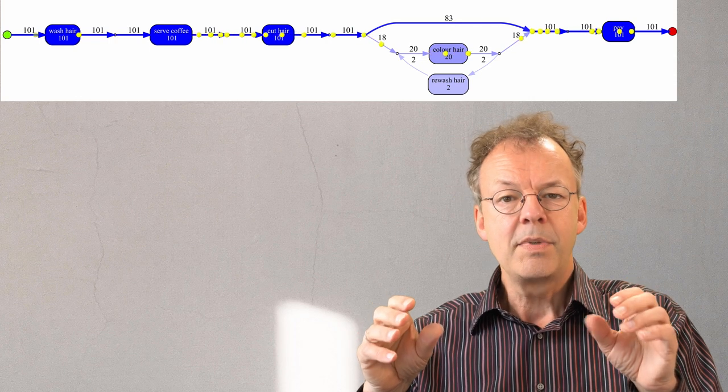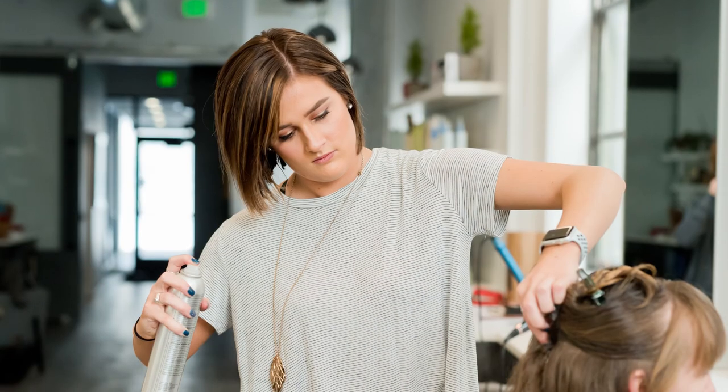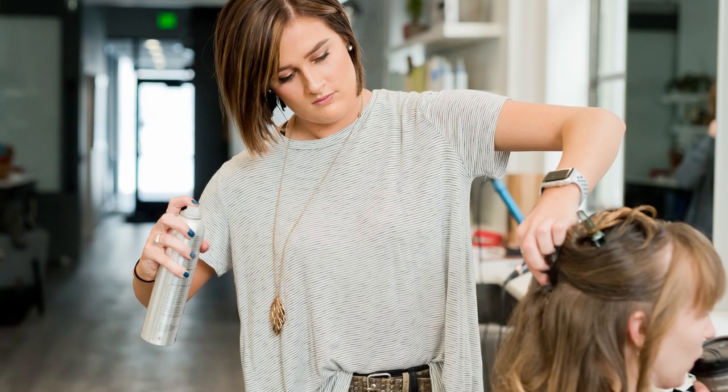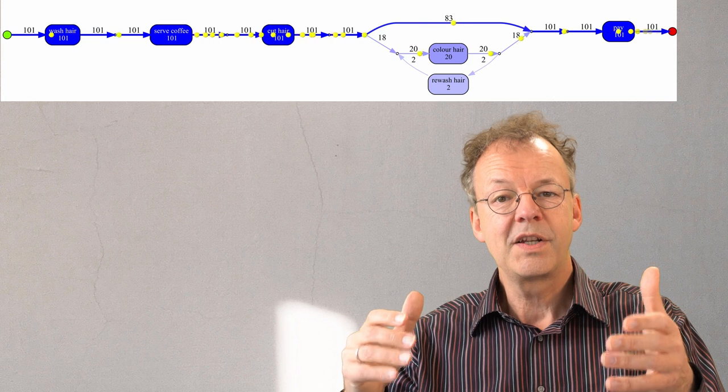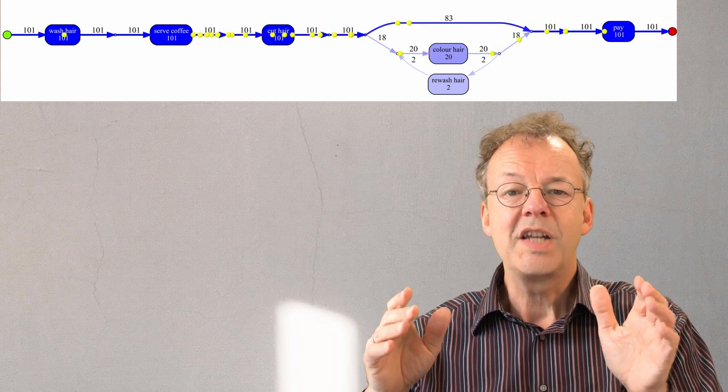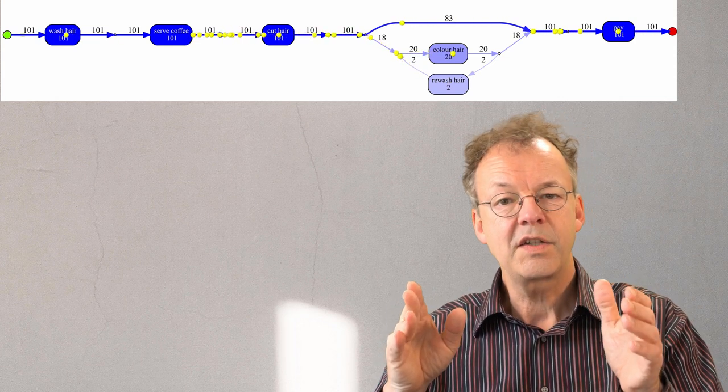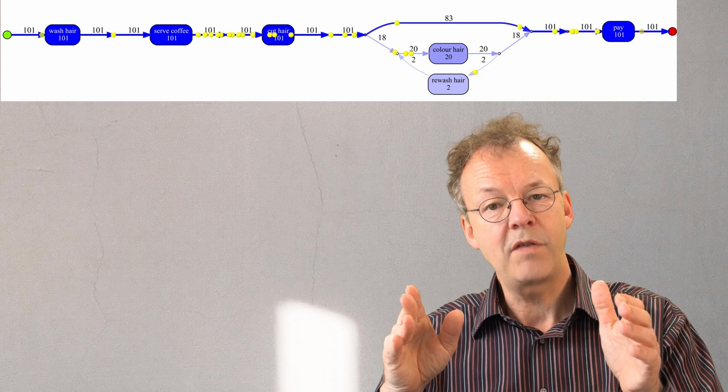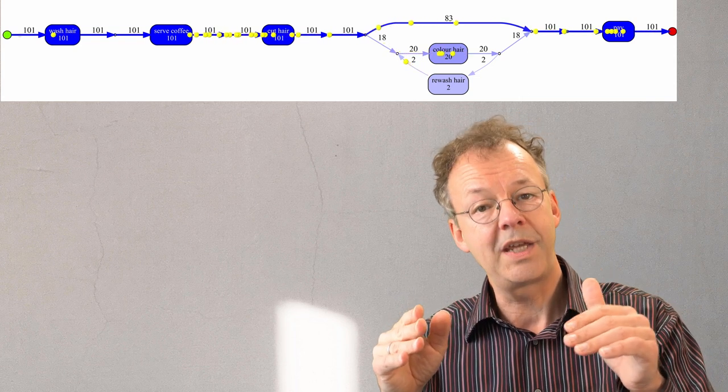The numbers are the number of customers that went through a certain path. Each yellow bead represents a customer. When beads are moving slowly before a task, this means that customers are either being serviced in the task or are waiting for it to begin.